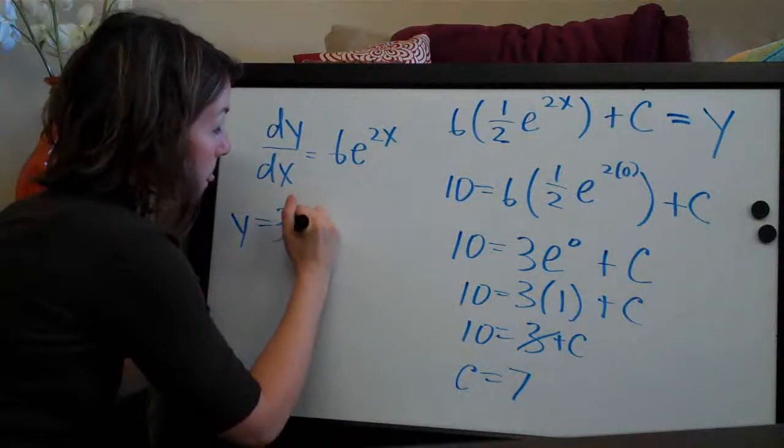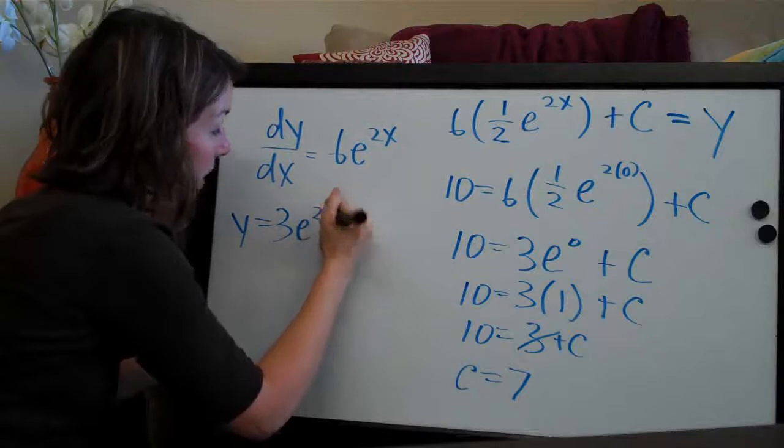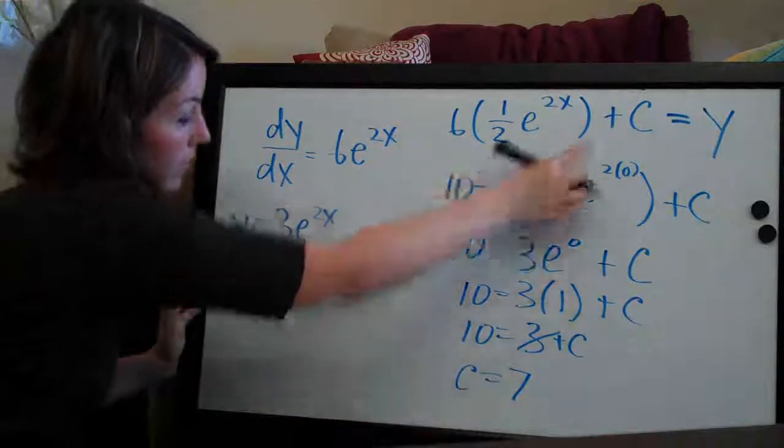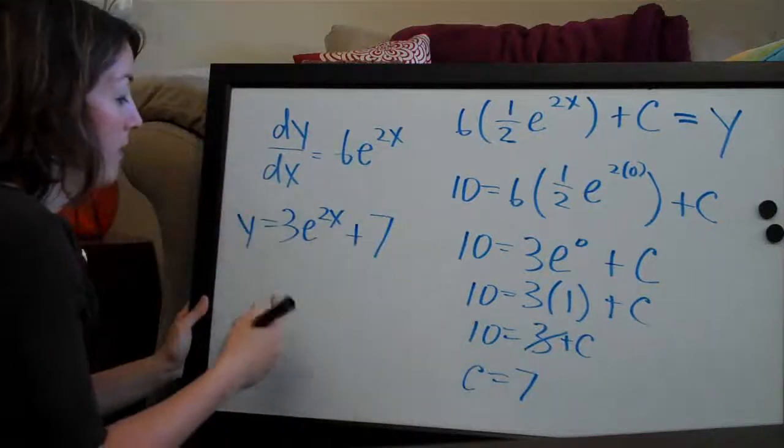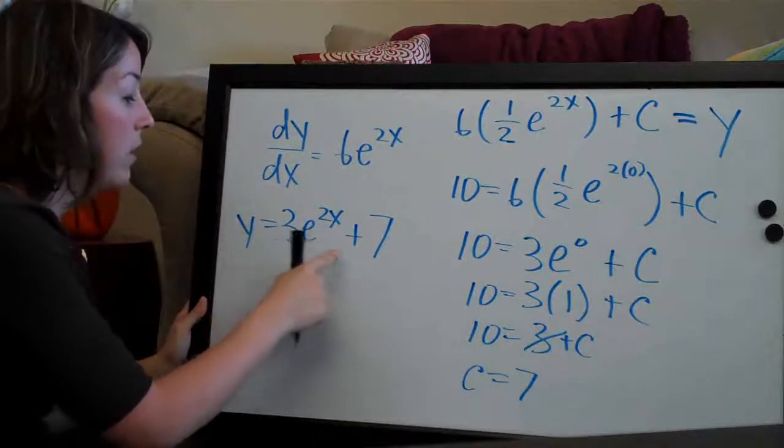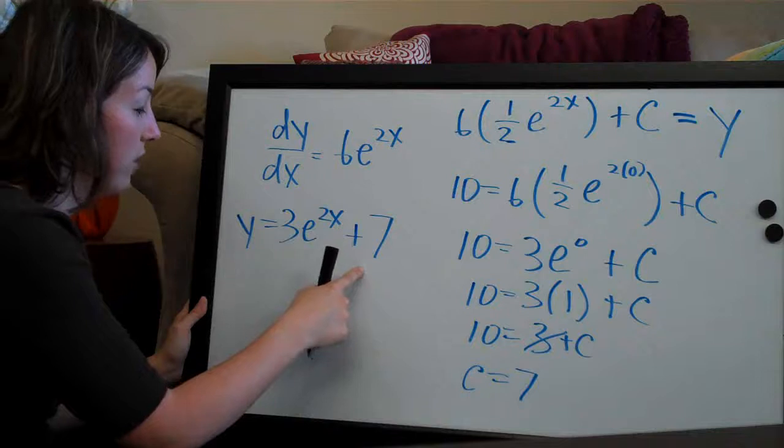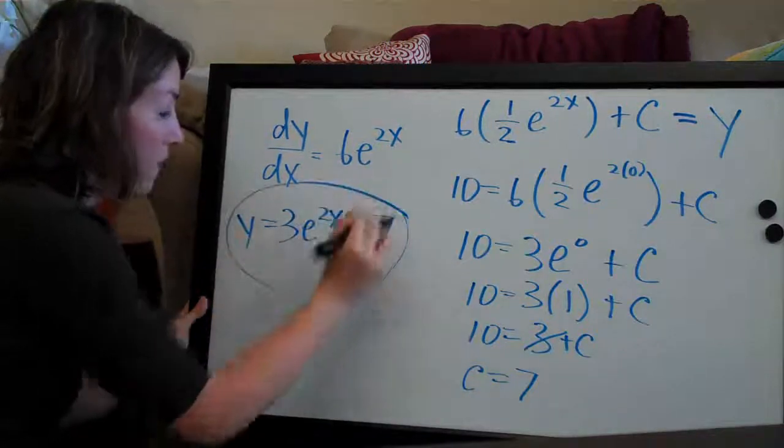So 3e^(2x), and then we have plus c, so we're going to say plus 7. We've done all the simplification we can. We plugged in c using our initial condition, so this is our final answer.